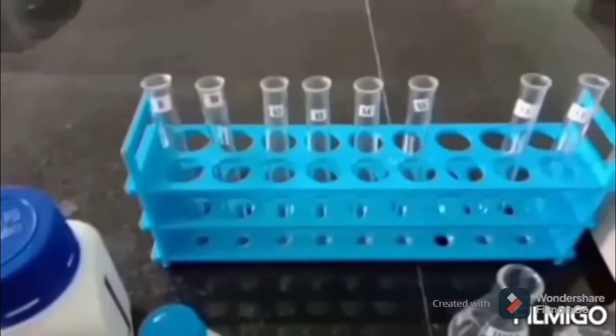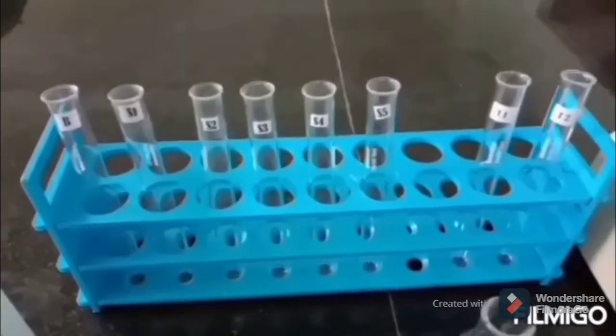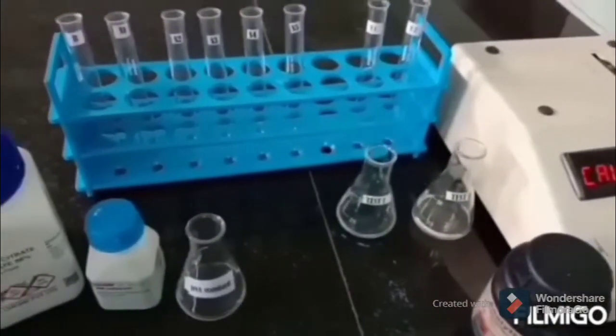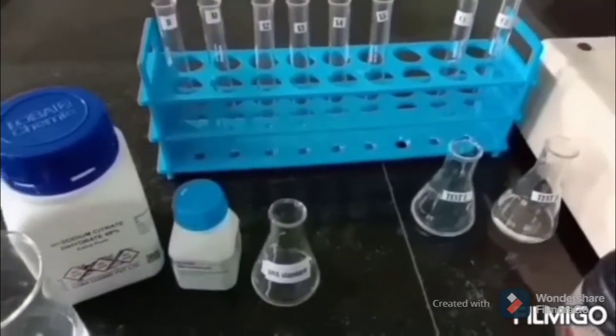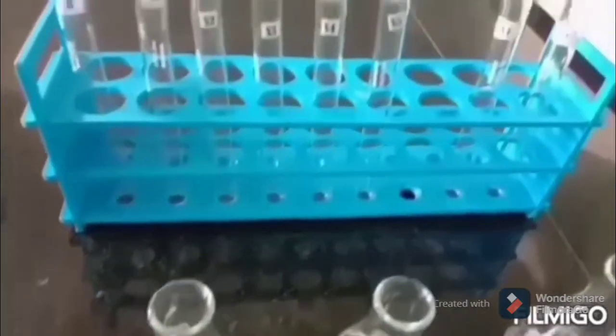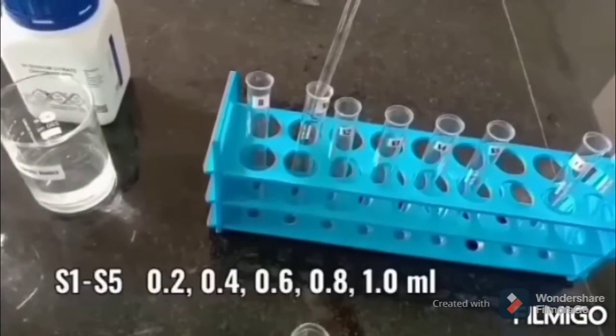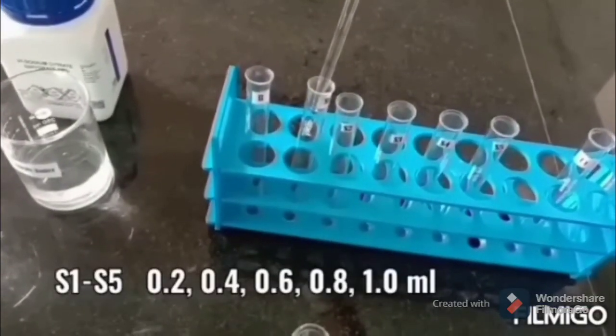Further we need test tubes marked B for blank, standard tubes S1 to S5 for standards, T1 T2 for tests, pipettes, boiling water bath, and colorimeter. The procedure starts with the addition of working standard of 0.25 milligram per ml concentration to standard test tubes marked S1 to S5.